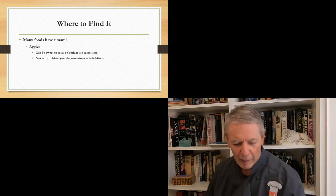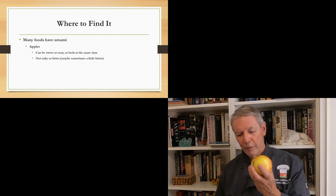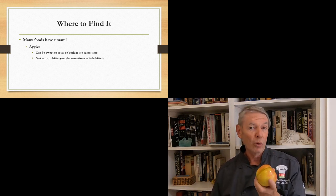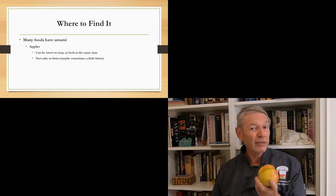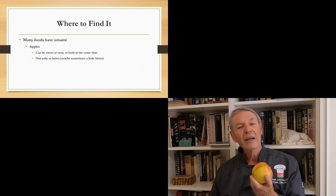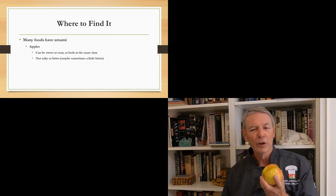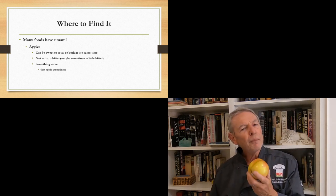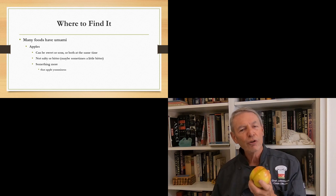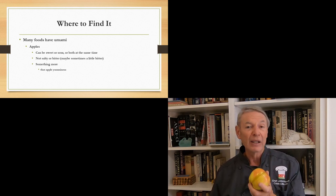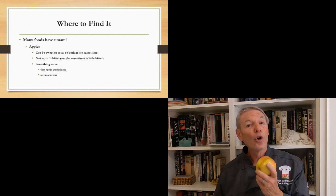Now, where can you find Umami? Well, let's take an apple, for example. Now, an apple can be sweet or it can be sour, and it can be both at the same time. They're not salty and they're not bitter. Maybe sometimes they can be a little bit bitter. But there's something more. There's an essential appleness, right? There's an apple yumminess. And that is Umami.